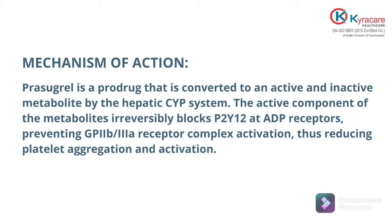When the active metabolite forms, it blocks the P2Y12 receptor, which is present on the platelet surface and helps in platelet complex formation. As a result, the GP2B and 3A receptor complex will not be activated. Since this complex is required to complete platelet aggregation, inhibiting it stops the platelet aggregation process and prevents harmful blood clot formation.